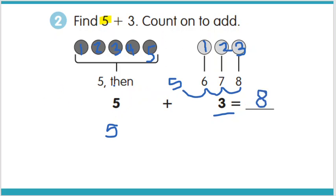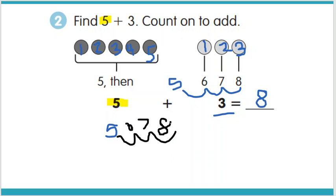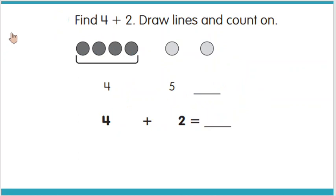The big thing is making sure you start with that bigger number and then count on however many. So we started at 5 and then went 1, 2, 3 — meaning 6, 7, 8.